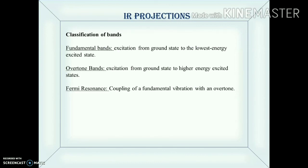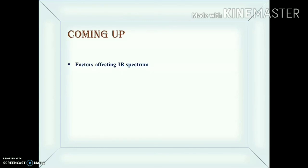In summary, we have studied three types of bands: fundamental bands — excitation from the ground to the lowest excited state; overtone bands — excitation from the ground to the next-to-next higher energy state; and Fermi resonance — where coupling of vibrational bands occurs. In the next videos we shall discuss the different factors that affect the IR spectrum.